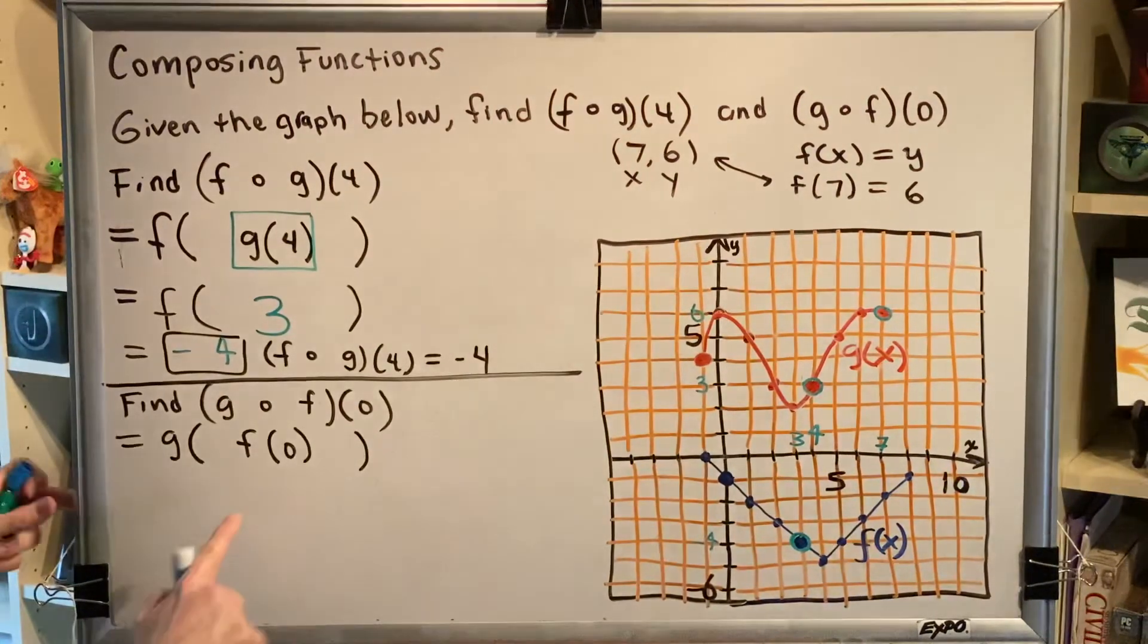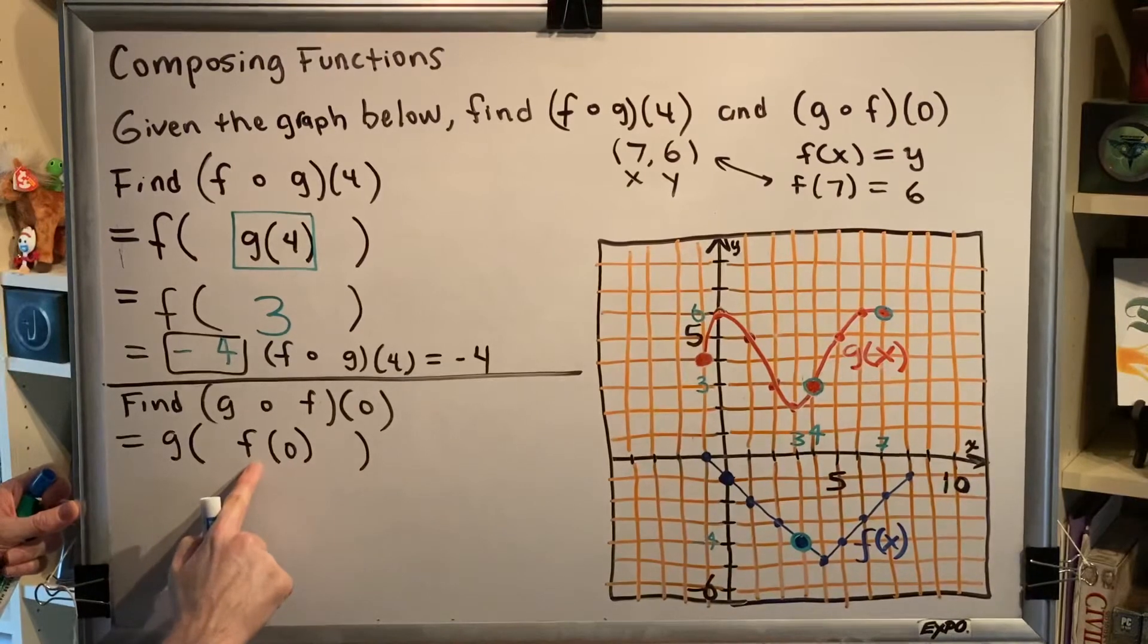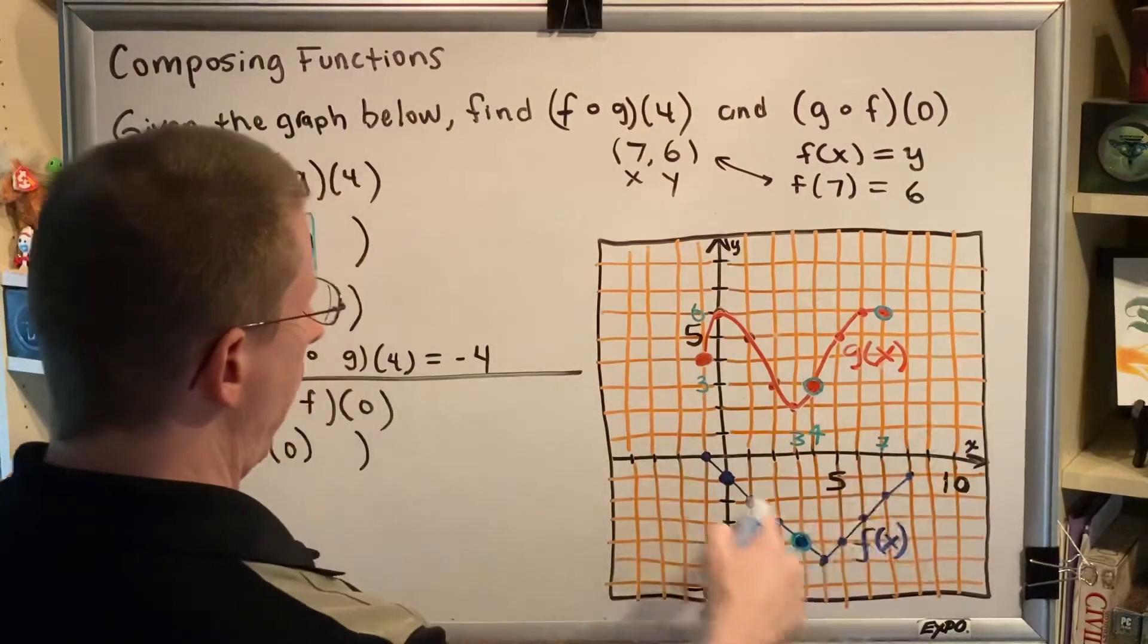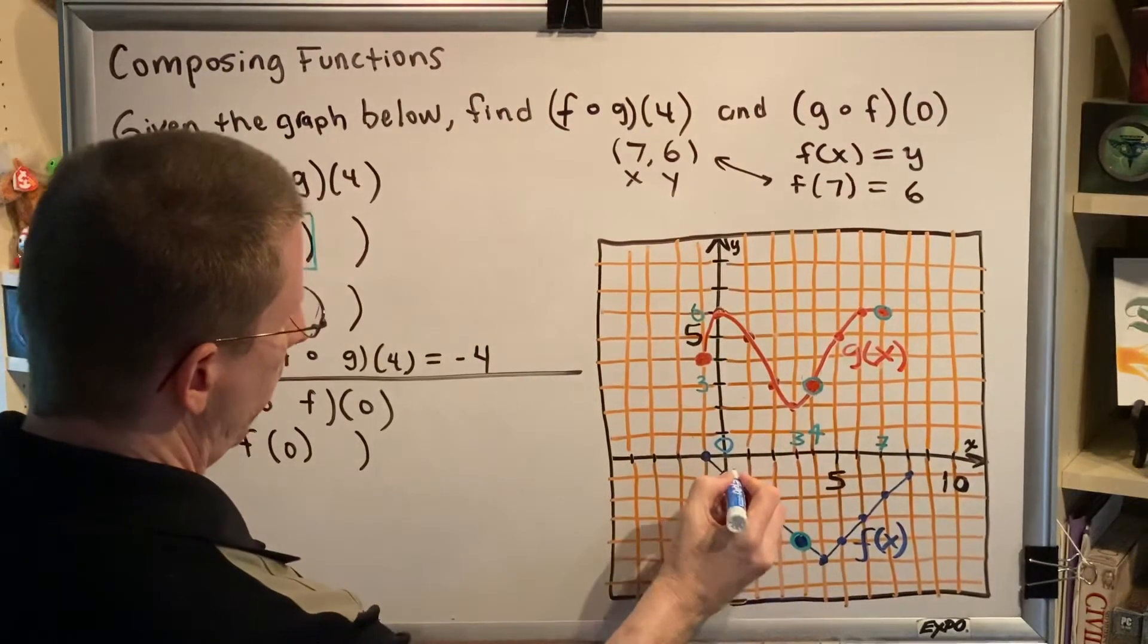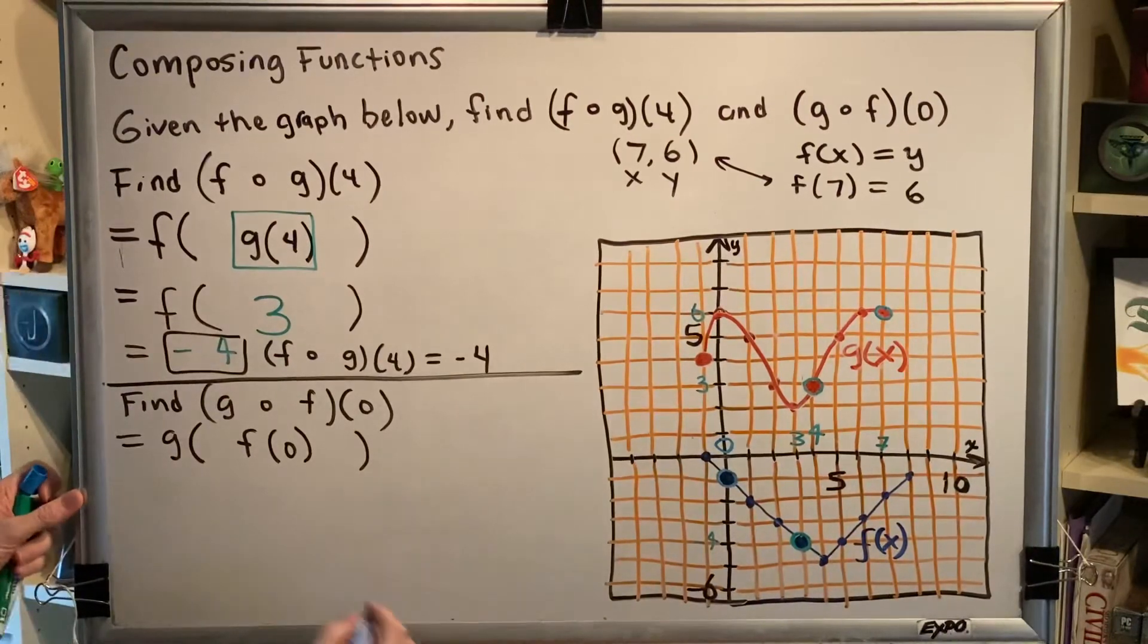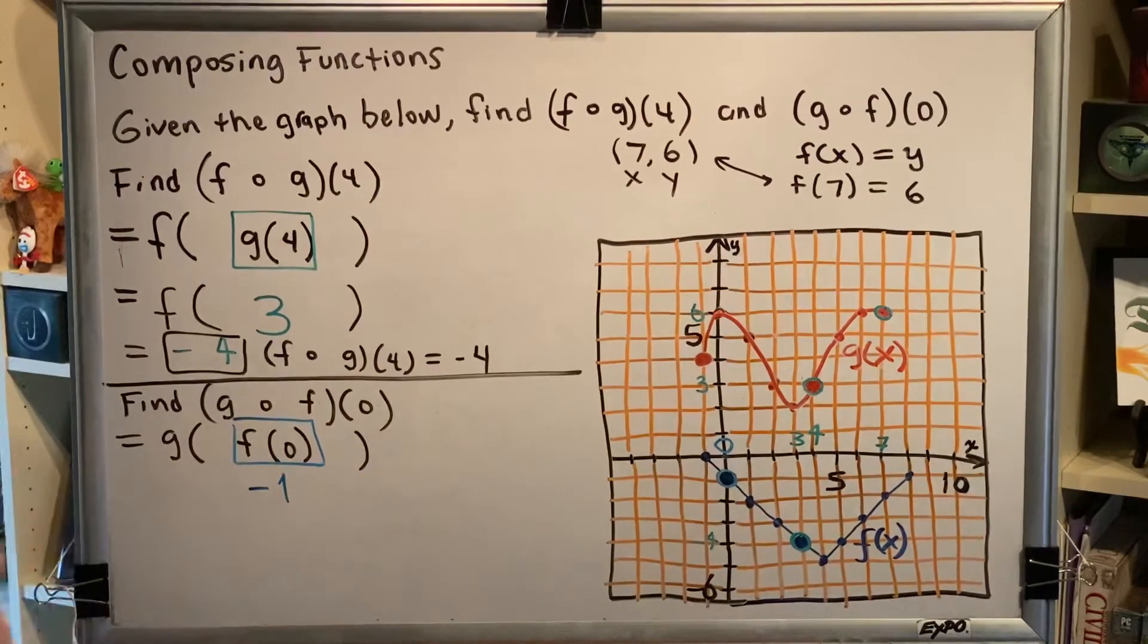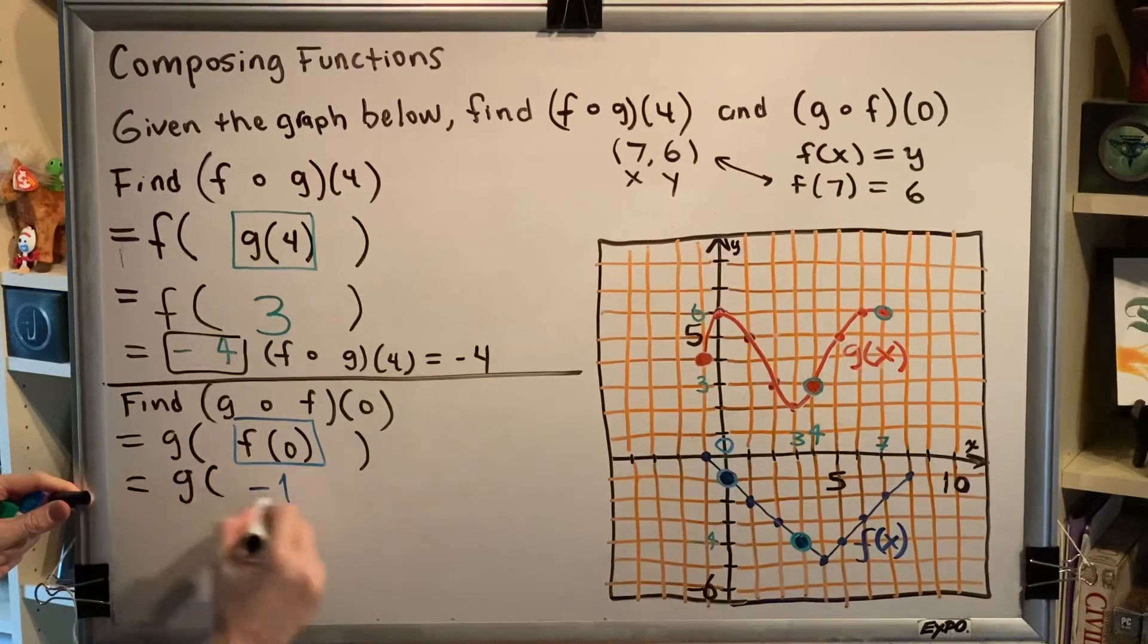That means x is 0 and we're going to go to graph f to find what the y value is. So which point on the f graph has an x of 0? That would be this point right here and its y value is negative 1. So we now have a negative 1 in place of this f of 0.